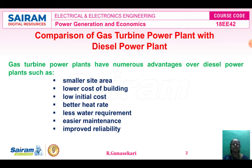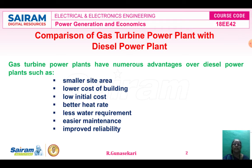Easier maintenance — the diesel power plant consists of a huge amount of components compared to the gas turbine power plant, which has four main components: turbine, generator, alternator, and compressor. So therefore, maintenance is also easier compared to the diesel power plant. Then, improved reliability.